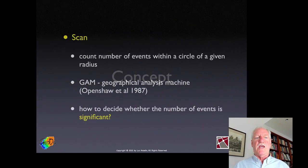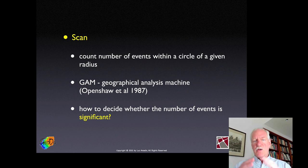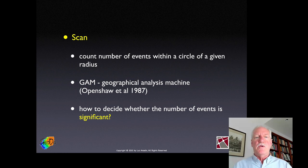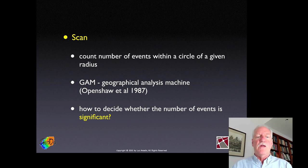What is a scan statistic? A scan is some areal shape — typically a circle, but it could be a square, an ellipse, or something based on networks. You count the number of events within that shape. So with a circle of a given radius, you count the number of events within that radius.